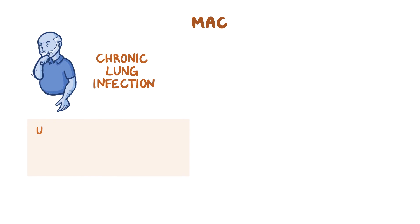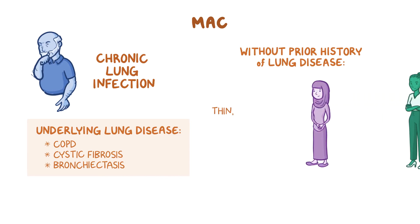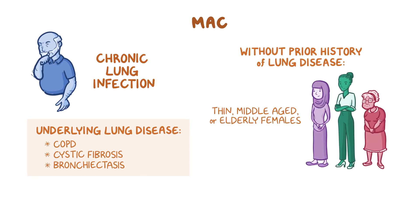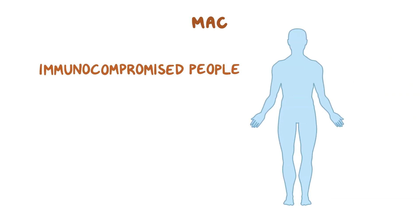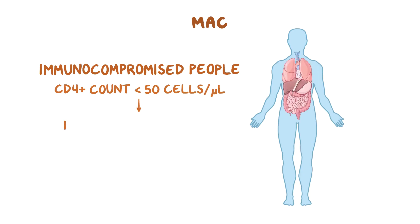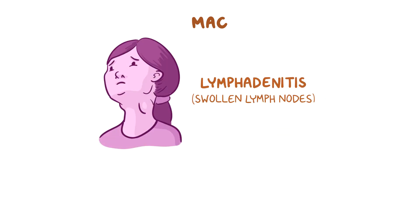MAC usually cause chronic lung infection in people who already have an underlying lung disease, such as chronic obstructive pulmonary disease, cystic fibrosis, or bronchiectasis. They can also affect people without a prior history of lung disease, especially in thin, middle-aged, or elderly females. People who are immunocompromised, like those with AIDS who have a CD4 cell count below 50 cells per microliter, are more likely to develop disseminated infection. In young children, MAC can cause lymphadenitis, or swollen lymph nodes.